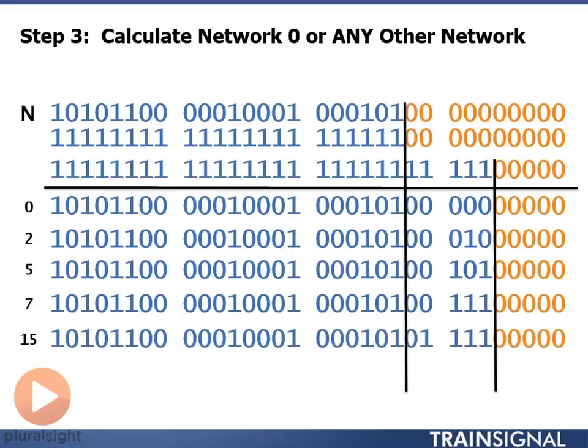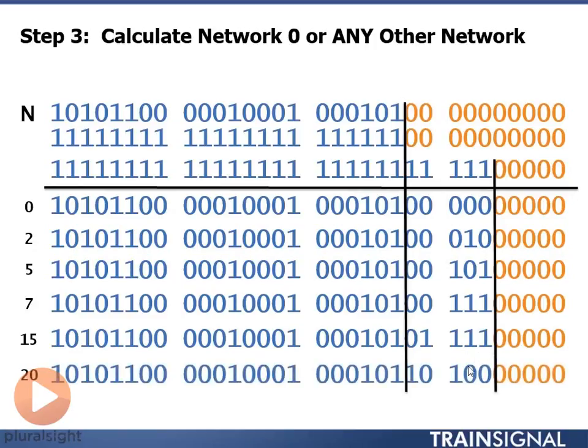We have network number 15. Same thing here - 15 in binary is 01111. Last, network number 20 here is 10100.